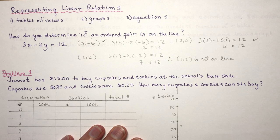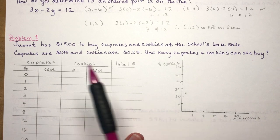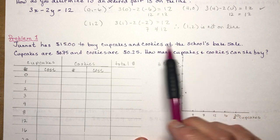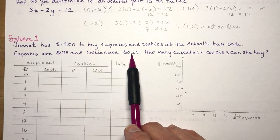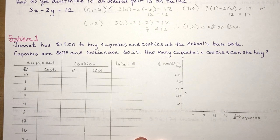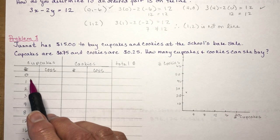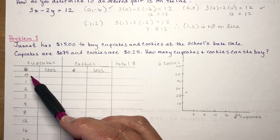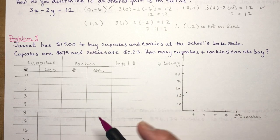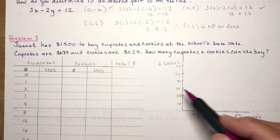Okay, so let's do some representing here. We're going to do three different word problems. The first one says Janet has $15 to buy cupcakes and cookies at the school's bake sale. Cupcakes are 75 cents and cookies are 25 cents. How many cupcakes and cookies can she buy? So let's take a look here.